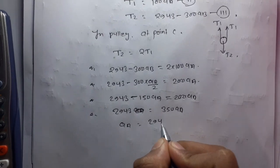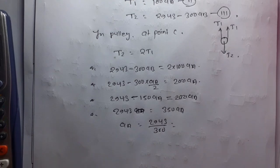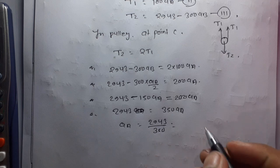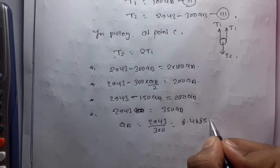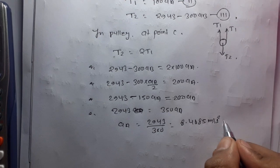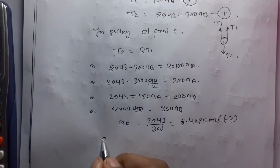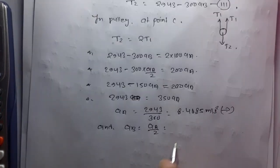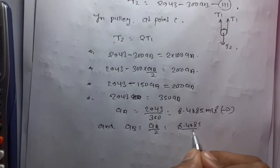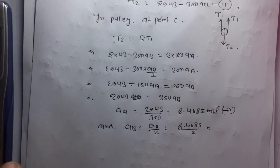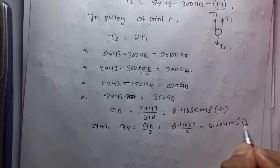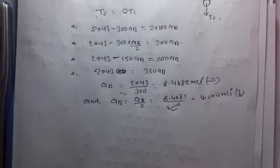Solving: aA equals 2943 divided by 350, which gives aA equals 8.4085 meters per second squared in the horizontal direction. Then aB equals aA over 2 equals 8.4085 divided by 2, giving aB equals 4.04 meters per second squared in the downward direction. The accelerations of block A and block B are now determined.